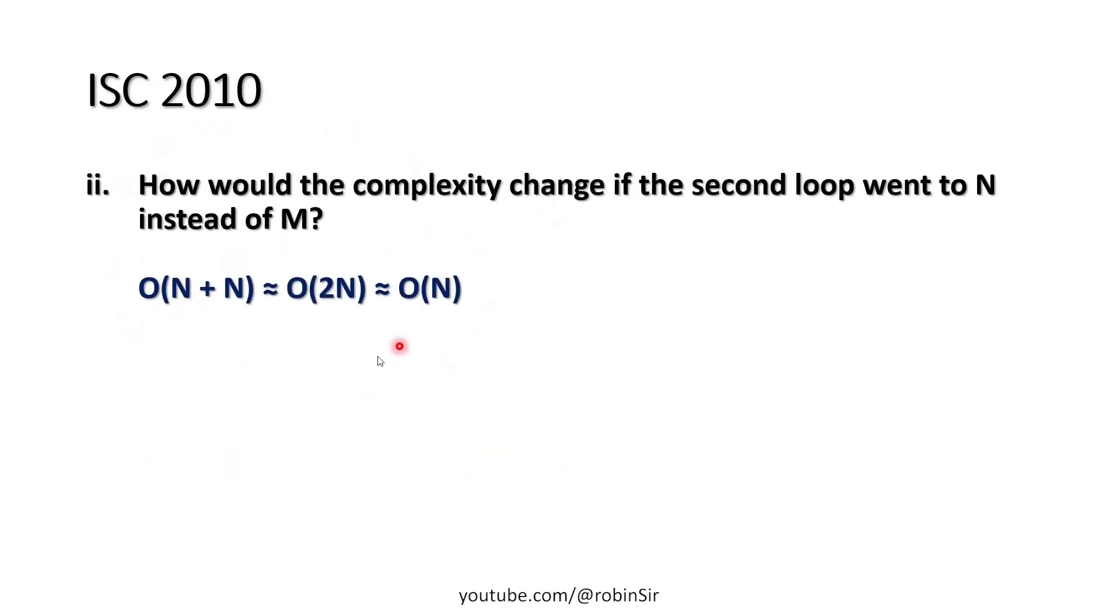The second part of the question asks how would the complexity change if the second loop went to n instead of m. So then both the variables will be the same here, n plus n which is 2n, and when we drop the constant, we are left with n. That's why this is also linear in nature.